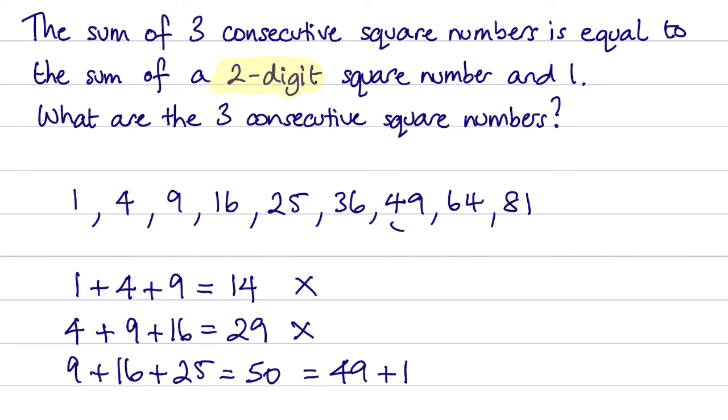And we have this two-digit square number here of 49. So this is correct. So our three consecutive square numbers are 9, 16 and 25.